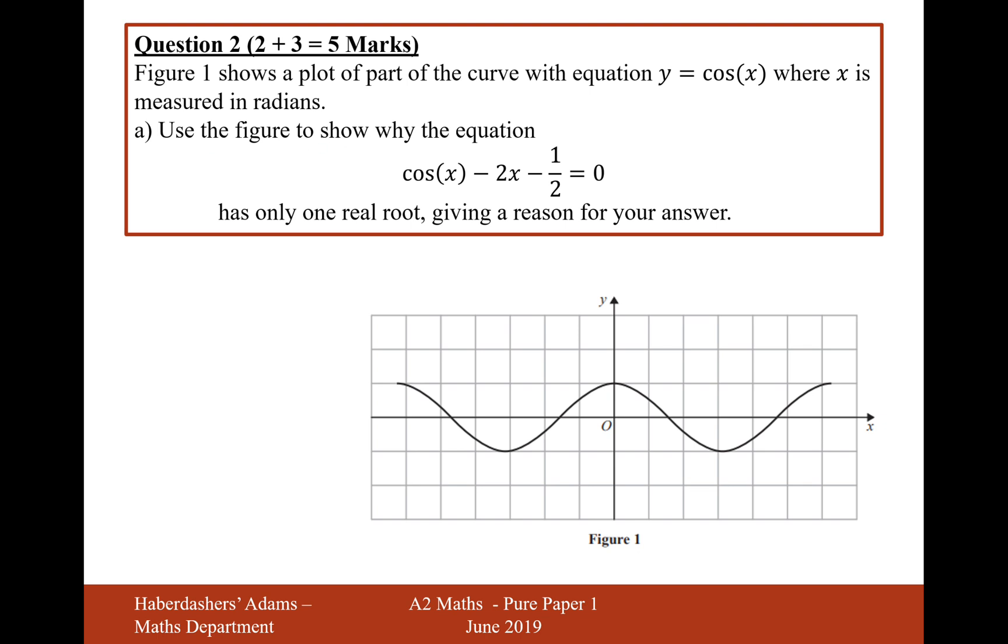Use the figure to show why the equation cos x minus 2x minus one-half equals zero has only one root, giving a reason for your answer. So if we take cos x minus 2x minus one-half equals zero and start rearranging this, cos x equals 2x plus one-half. We'll take the 2x and the half on the other side.